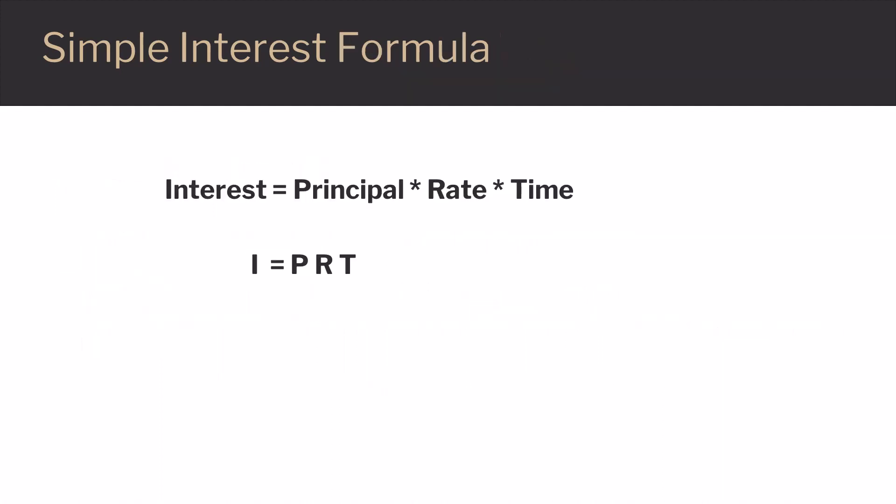Here's the formula we're going to use to calculate simple interest: Interest equals principal times rate times time, or I equals PRT. Let's do an example.